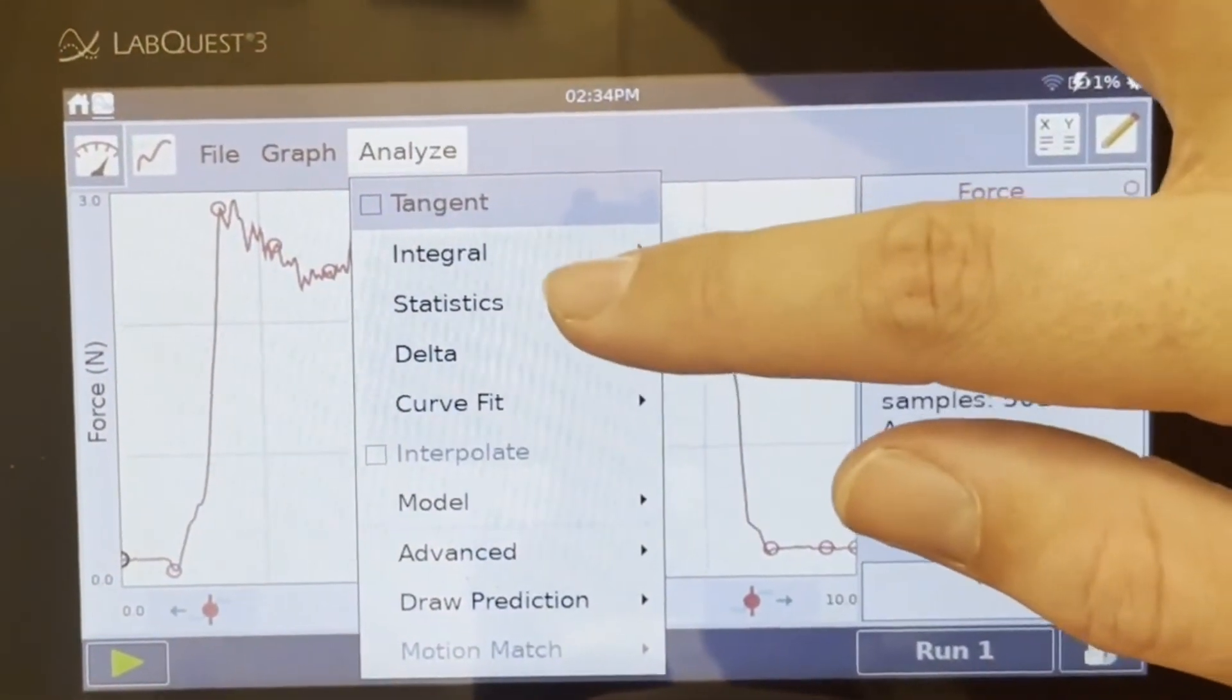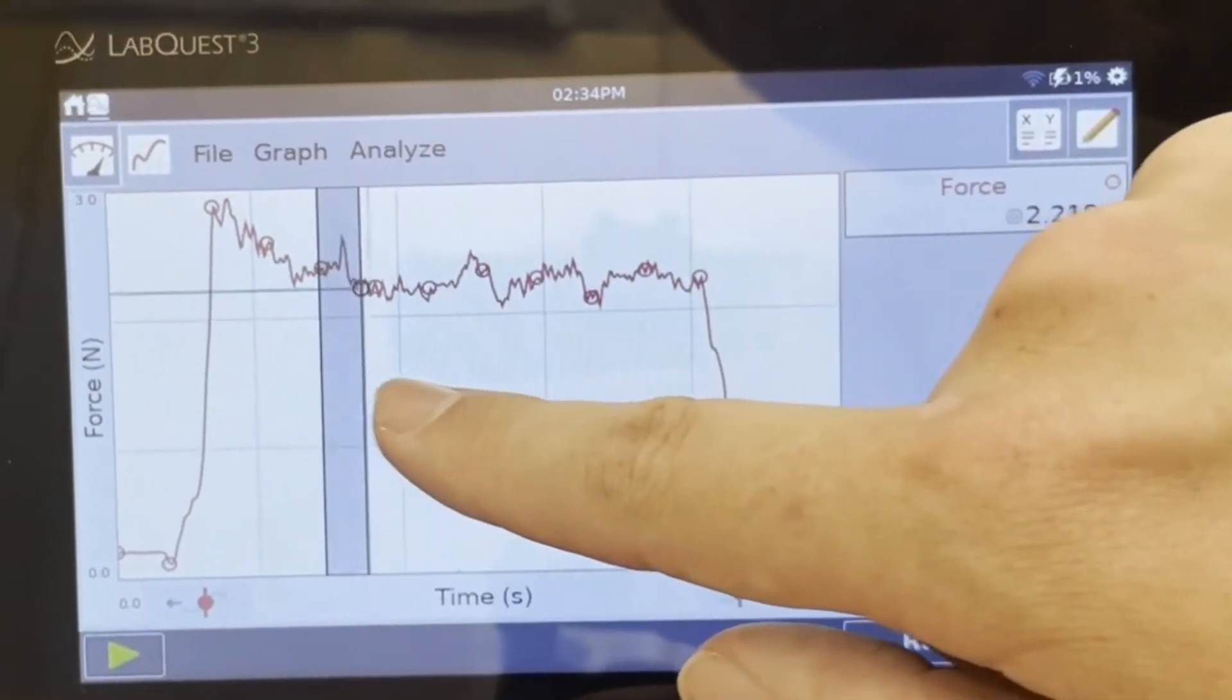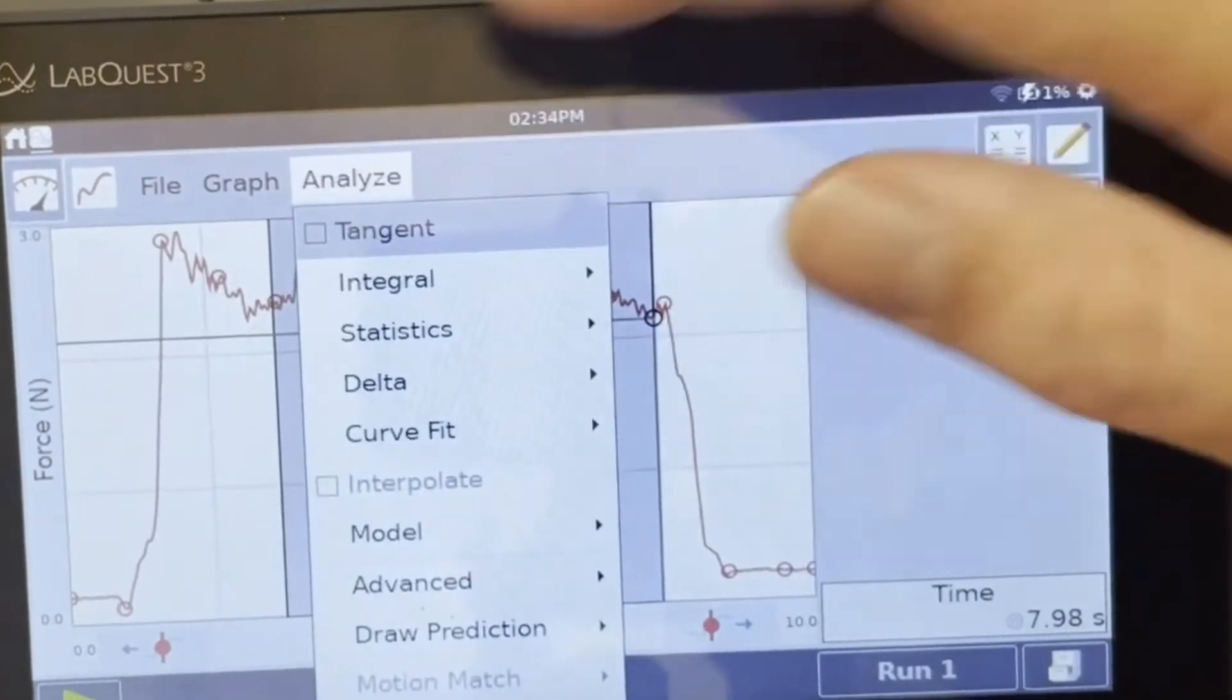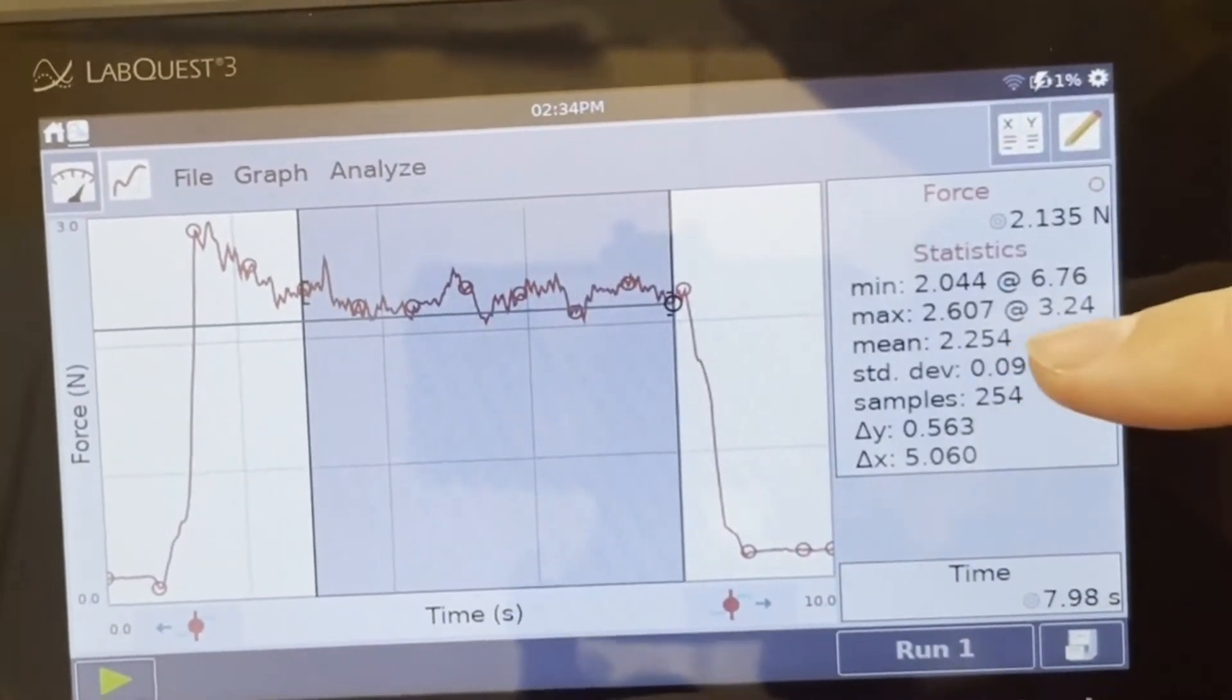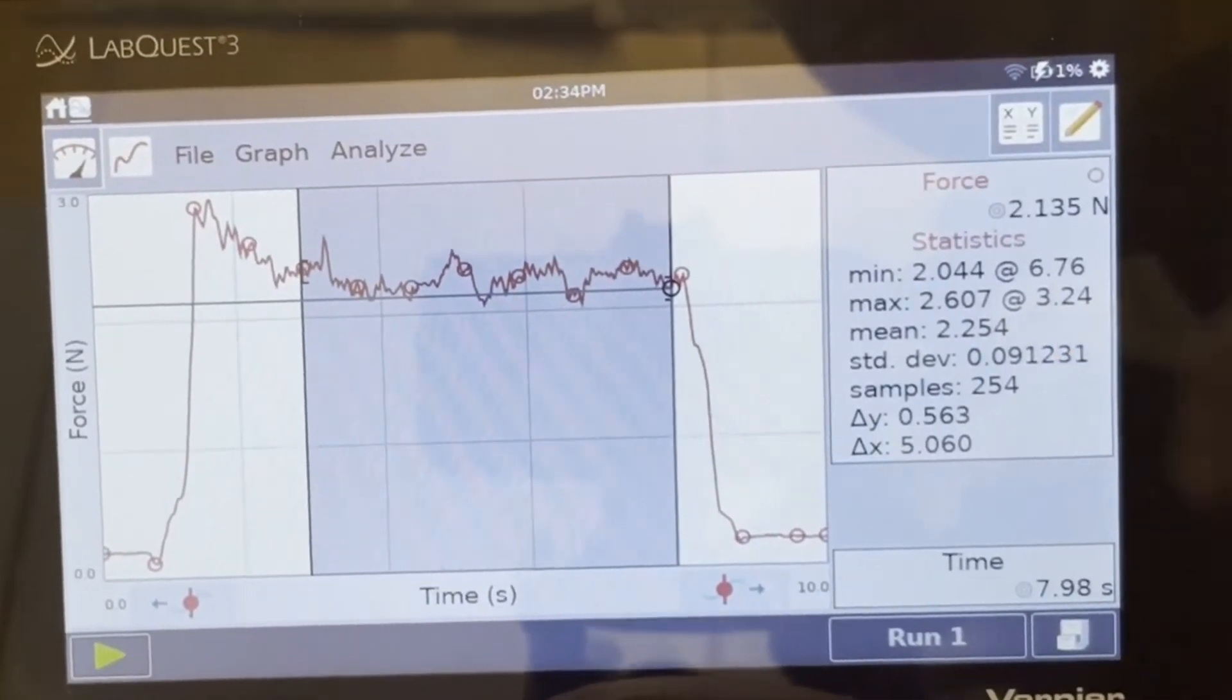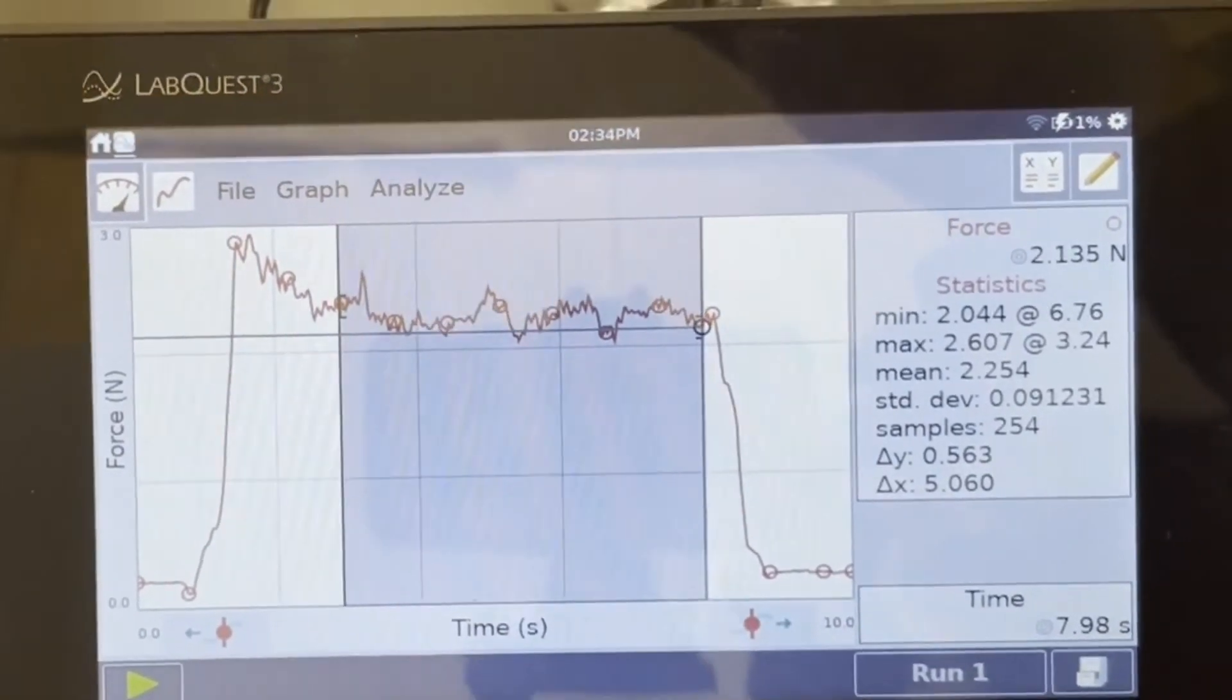Let's turn off statistics and now we're just going to highlight this portion which is our portion of kinetic friction. We're going to go to statistics again to figure out what the average is and there's the average, the mean 2.254 newtons. We can record that in our table and now we're going to increase the weight and do it again.